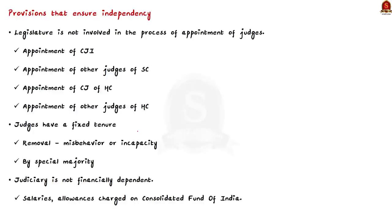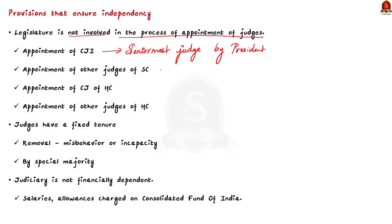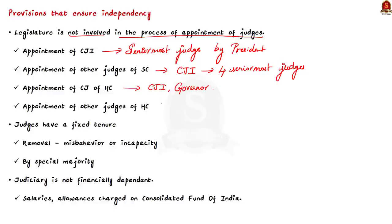We'll understand how independence is provided to judicial members. Firstly, the legislature is not involved in the appointment of judges. For the Chief Justice of India, the convention is that the senior-most judge of the Supreme Court is appointed. For other Supreme Court judges, the president consults the Chief Justice of India, who in turn consults the four senior-most judges of the Supreme Court, according to the Three Judges Case 1998. The Chief Justice of a High Court is appointed by the president after consulting the Chief Justice of India and the governor of the concerned state. For other High Court judges, the president consults the Chief Justice of India, the Chief Justice of the concerned High Court, the governor of the state, and the Chief Justice of India in turn consults a collegium of two senior-most Supreme Court judges.